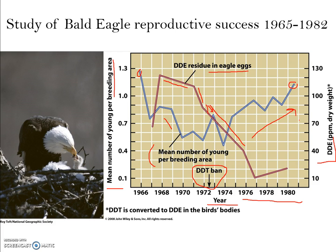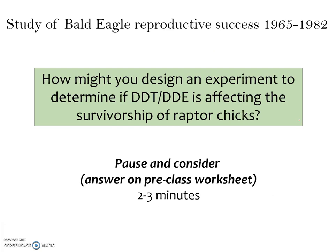This figure shows a correlation between DDE residue in eggs and mean number of young per breeding area, but based on this data alone, we don't necessarily know whether this is causation or simply correlation — something else could be driving the changes. I'd like you to pause the video and think about how you might design an experiment to directly test whether DDT or DDE affects the survivorship of raptor chicks.